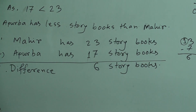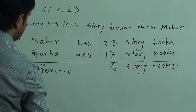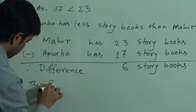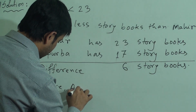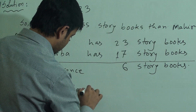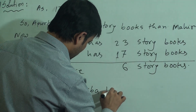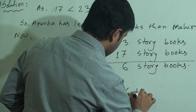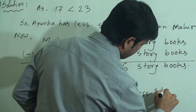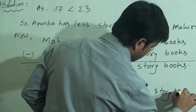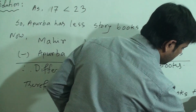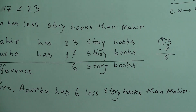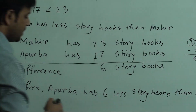Therefore, Aparva has 6 less story books than Mahir. So our answer for question 6 is 6 story books.